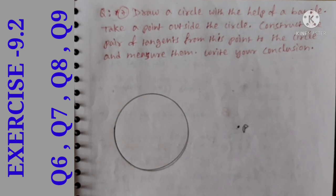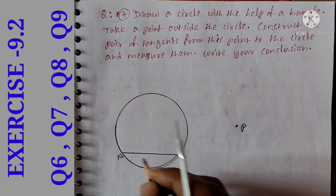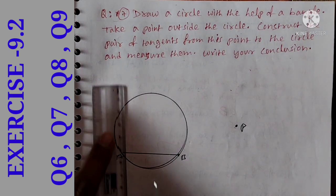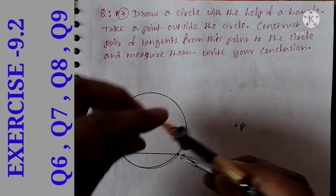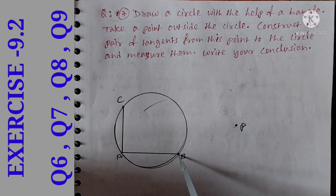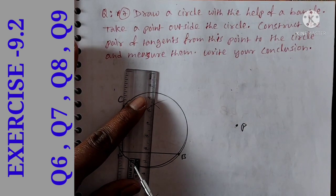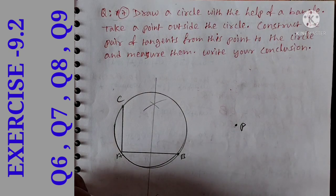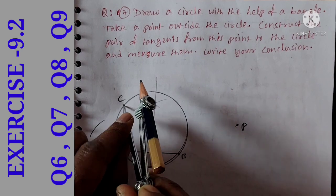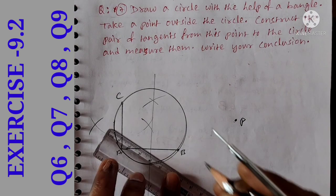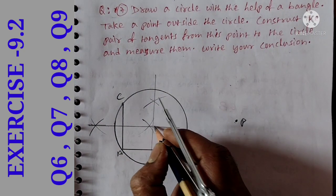We draw two chords. Here is chord AB, and here is chord AC. We draw the perpendicular bisector of AB — A is a center, draw arcs more than half, then the same from B, giving the bisector. Similarly, draw the perpendicular bisector of AC with C as center. These two bisectors intersect to give the center of the circle — let's call it O.